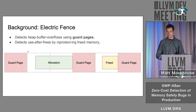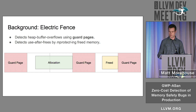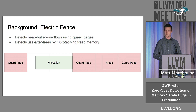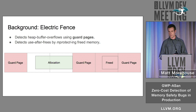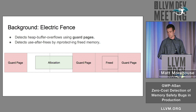Electric Fence is also able to find use-after-free. It does so by marking the page that a freed allocation lives on as unreadable and unwritable. So if you try to access that memory again, you also trigger a segfault.